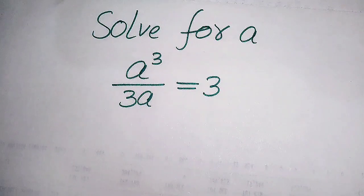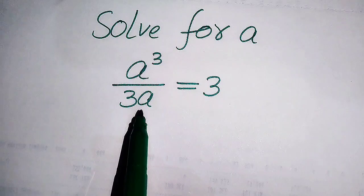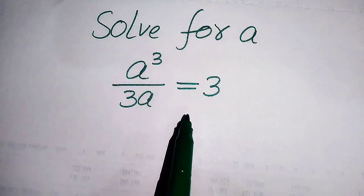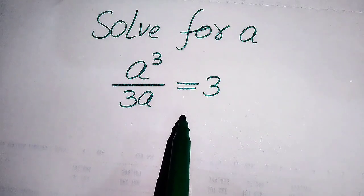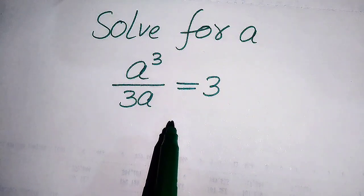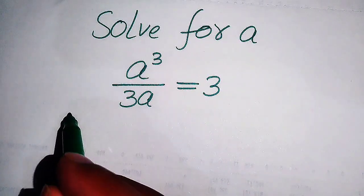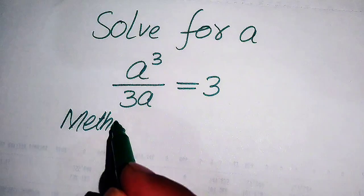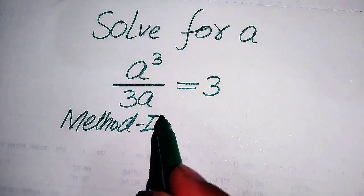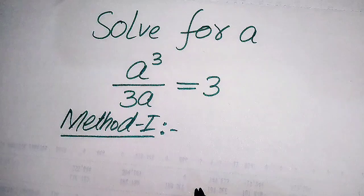Hello everyone. How to solve this problem: for the values of a, if we have a cubed divided by 3a equals 3. We solve this problem for all the values of a. First we need to find all the roots of this equation, and at the end we will verify which of the roots are solutions and which are extraneous roots. We solve this problem using two methods.